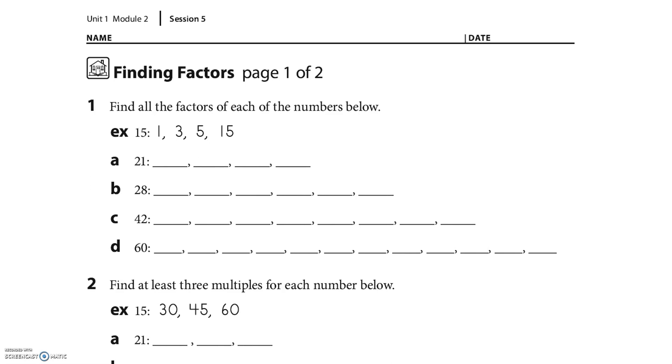Find all the factors of each number below. For 15, they said all the factors were 1, 3, 5, and 15. I'm using 21 as my example and I'll use factor pairs. I know that 1 times 21 is 21. 2 doesn't go into it, but 3 goes into it and 3 times 7 is 21. They're not in order - I don't think they have to be. They give me lines, so in this case I know I'm done because I filled in all the spaces. But that won't always be the case. If they gave us no lines, I'd have to find them all.